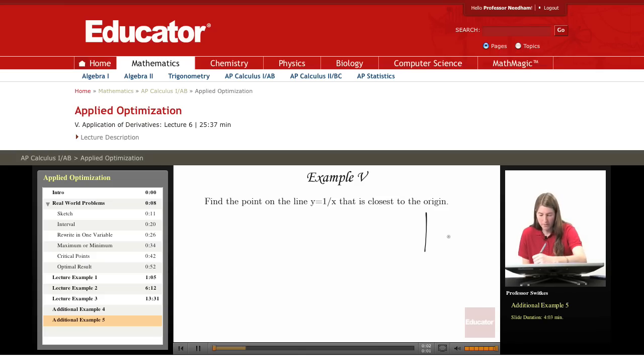This is a classic geometry problem using calculus. We're going to look at the curve, and in my problem statement I mistakenly called this a line, but it's a curve, so we'll look at the curve y equals 1 over x, and I want to look for what point on it is closest to the origin.